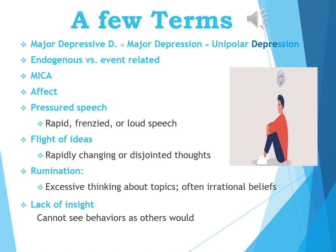Our last term is lack of insight — the person cannot see their behaviors as others would. Think of an example of a hoarder: others are appalled and horrified, while the person says 'just a little bit messy.' Maybe a person in a manic phase can't see how erratic and self-destructive their behaviors seem to others. Review the terms until you're very comfortable with them.